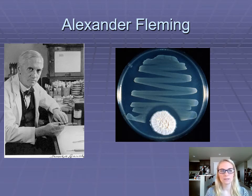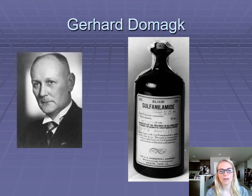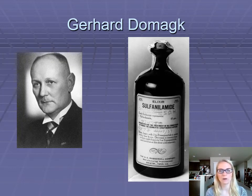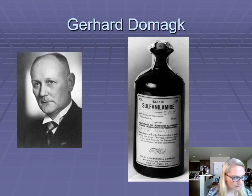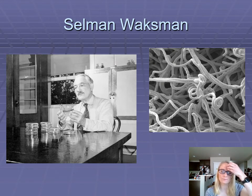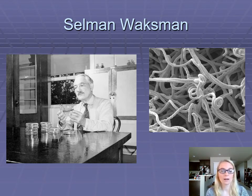Even though penicillin was the first antibiotic discovered, it wasn't the first one widely used — it wasn't until the 1940s that penicillin became widely used by the public. Before that, we had Gerhard Domagk, who discovered sulfonamides — the sulfa-based antibiotics. In 1932, this was really the first widely used antibiotic across a wide spectrum of bacteria. And then Selman Waksman actually coined the term 'antibiotic' — Fleming usually gets all the credit, and yes, he did identify penicillin, but he didn't call it an antibiotic. Waksman did.